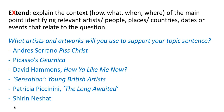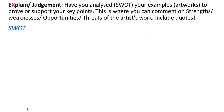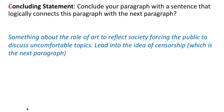To extend, here are some artists you might want to use in the extend part of the paragraph, or another artist from your own research. Refer to three aspects of the artwork to support your main point — be selective, choosing only aspects supportive of your topic sentence. SWOT that artist's work and try to include quotes from critics at the time. For your concluding statement, something about the role of art to reflect society, forcing the public to discuss uncomfortable topics — leading to an idea of censorship, which is the hint for the next paragraph.